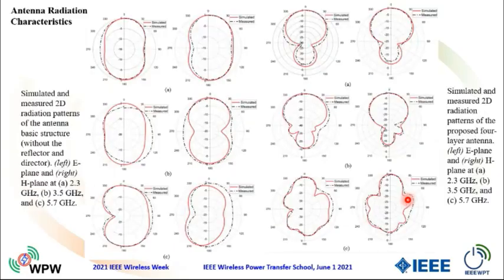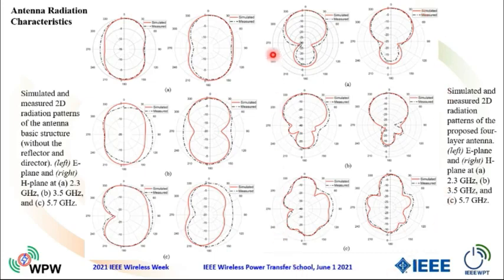Here are the radiation characteristic results — 2D measured and simulated at two states: for the driving element only, and here for the reflecting plane and the director structure. We can notice that the directional properties are enhanced for this antenna by adding the reflecting plane and the director structure.